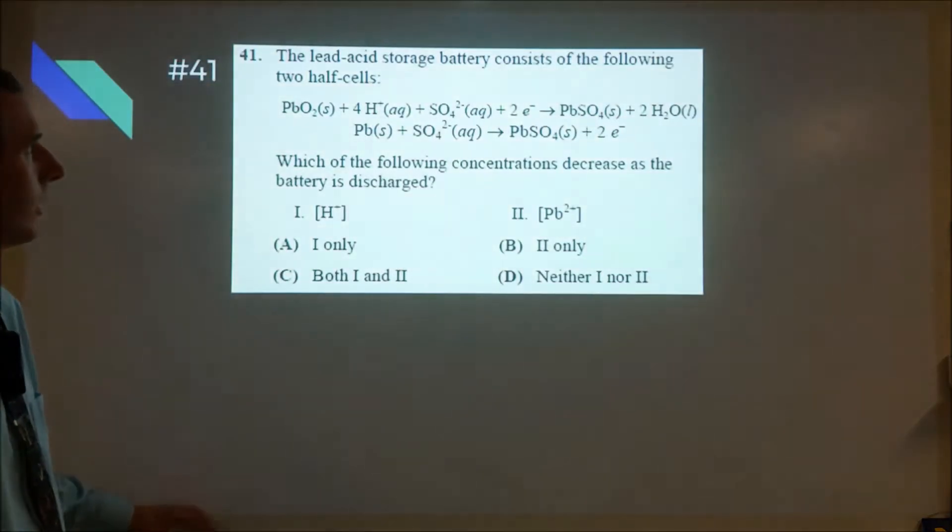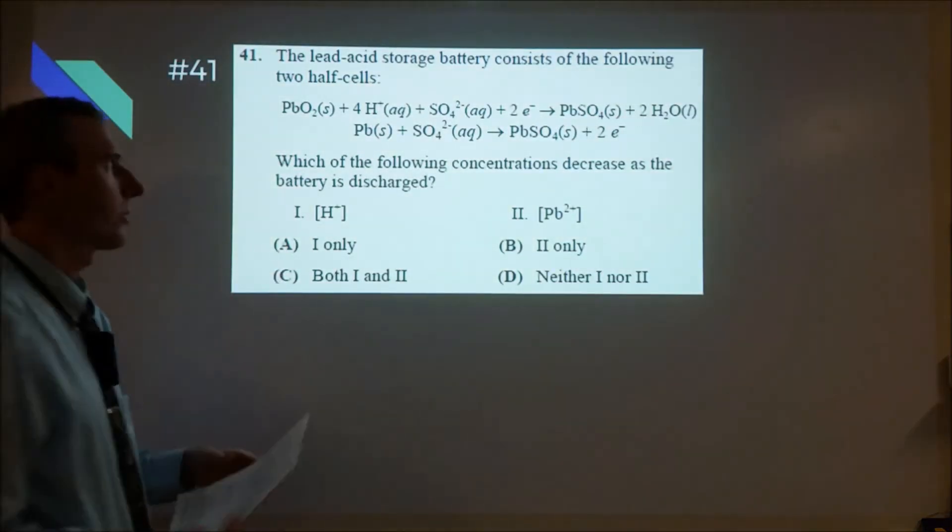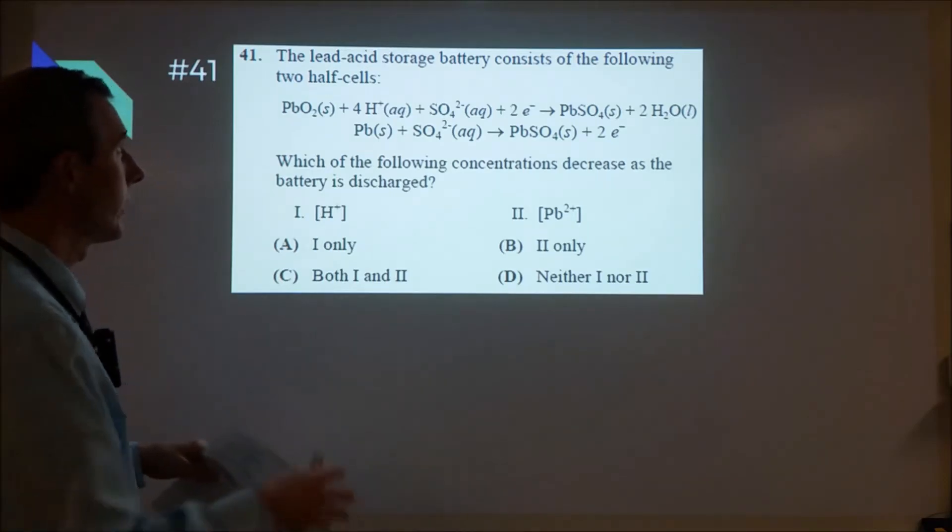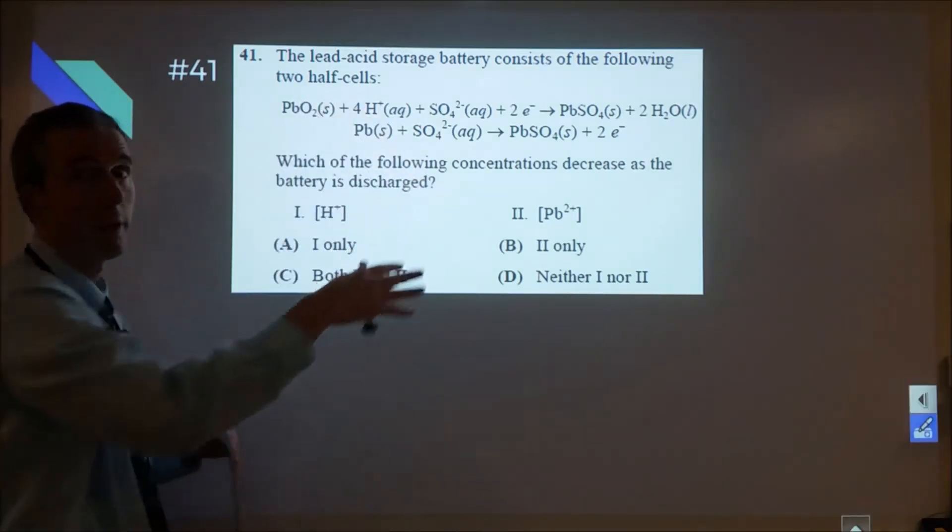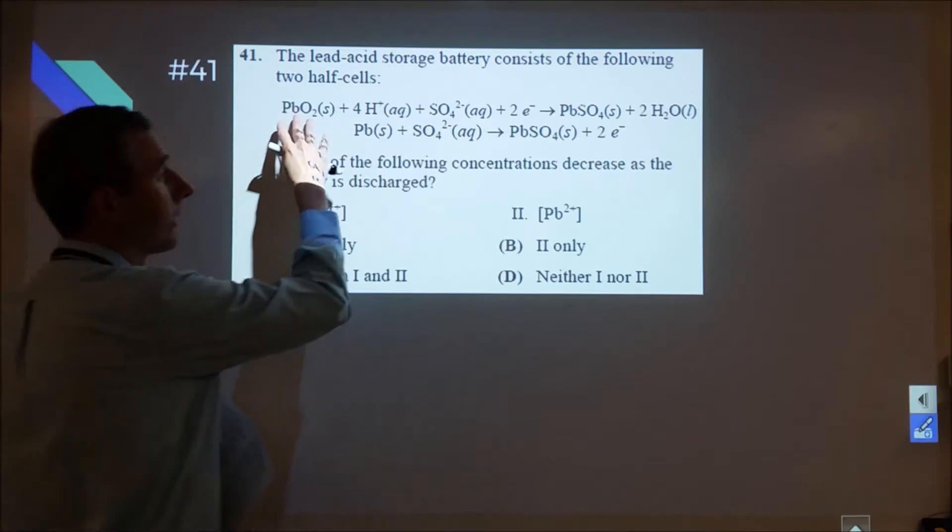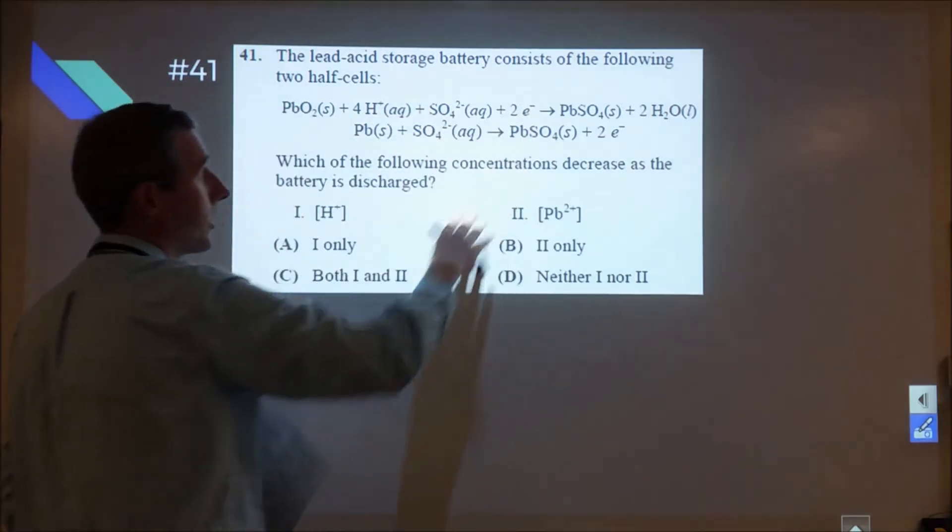So 41 through 50 now. 41 is a tricky question. It's an electrochemical question looking at a specific type of battery, a lead-acid storage battery, which is a car battery, and we're looking at the reduction on top, oxidation on the bottom.